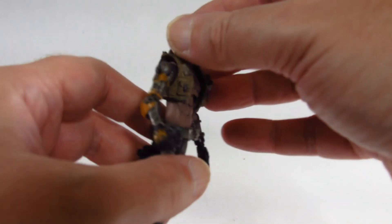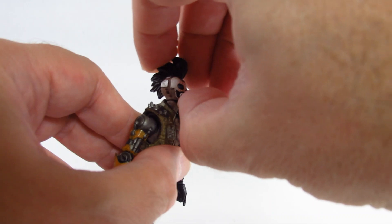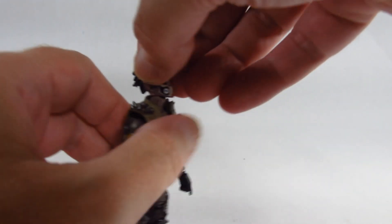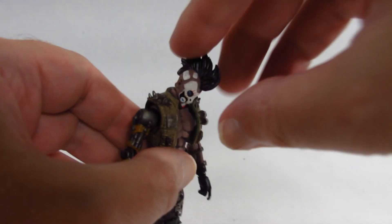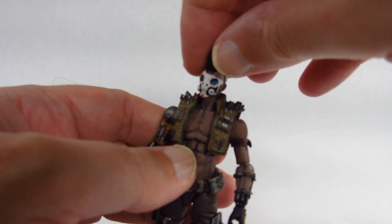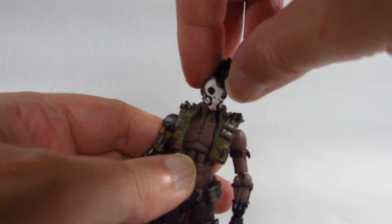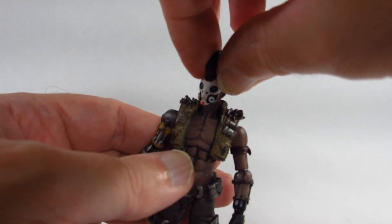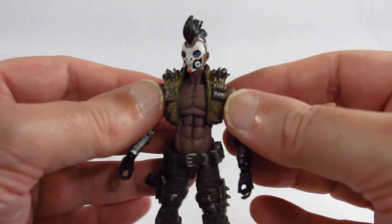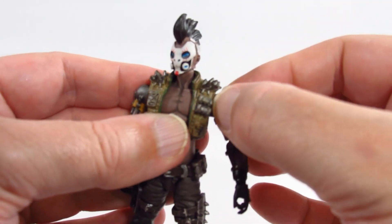So let's take a look at the articulation. We can look up, and look down, and turn side to side. There's head tilting, very impressive. Now I'm being very careful because this is a model and not an action figure, not a toy. So we'll just be careful with the joints.